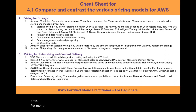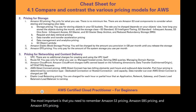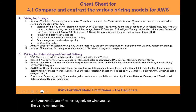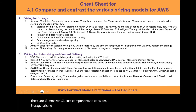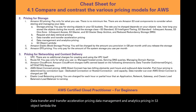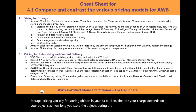For storage pricing, the most important ones to remember are Amazon S3, Amazon EBS, and Amazon EFS. With Amazon S3, you pay only for what you use with no minimum fee. There are six S3 cost components: storage, requests and data retrieval, data transfer and transfer acceleration, data management and analytics, and S3 Object Lambda. The most important for the exam is storage pricing — you pay for storing objects in your S3 buckets based on object size, storage duration, and storage class.